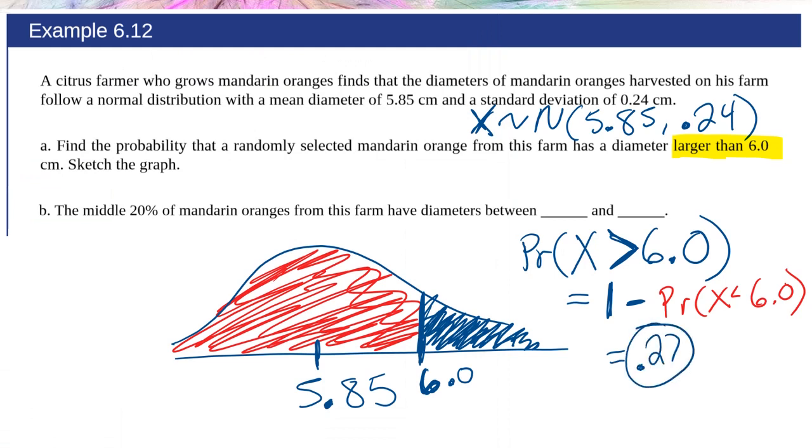Moving on to part B, we need to find the middle 20% of oranges from this farm have diameter between what two numbers?